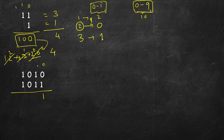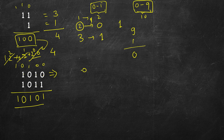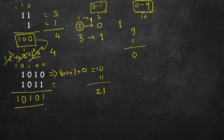Let's do one more operation for practice. Carry is 0 initially. We add 0 plus 1 to get 1, no carry. Then 1 plus 1 gives 2, so the result digit is 0 and carry is 1 — just like when we add 9 plus 1 we carry forward 1. Next, carry 1 plus 0 plus 0 gives 1, no carry. Then 1 plus 1 gives 2, result digit 0, carry 1, written at the front. Converting to decimal: 0 plus 2 plus 0 plus 8 is 10, and the other number is 16 plus 4 plus 1, which is 21.